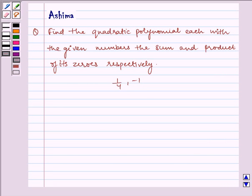Hello and welcome to the session. Today I will help you with polynomials. Let us discuss the following question: Find the quadratic polynomial with the given sum and product of its zeros respectively, that is 1/4 and -1.